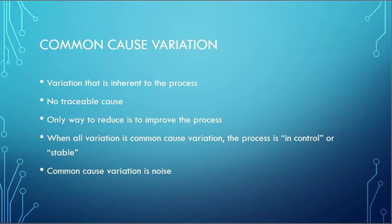So when we study the variation in the system, we are going to divide it into two kinds. The first kind is common cause variation.